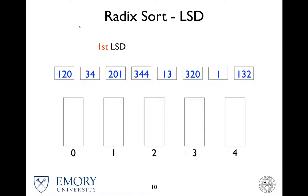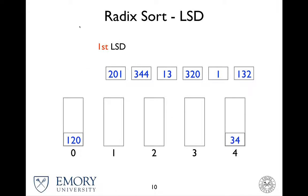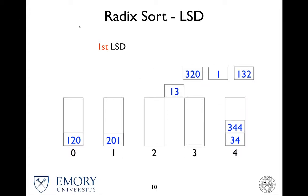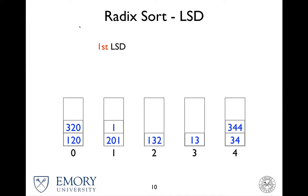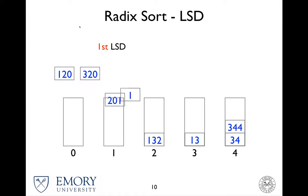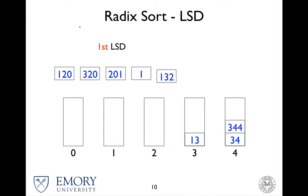120 goes to the 0 bucket, 34 goes to 4, then 1, 4, 3, 0, 1, and 2. So once all the keys are added to the buckets, we simply put them back to the array as it goes. Nothing has to be sorted, just put as it has come.